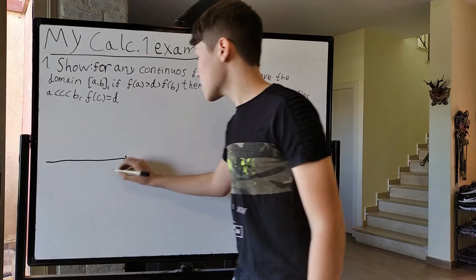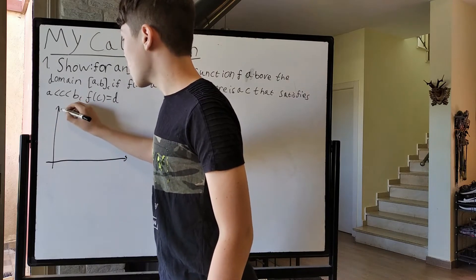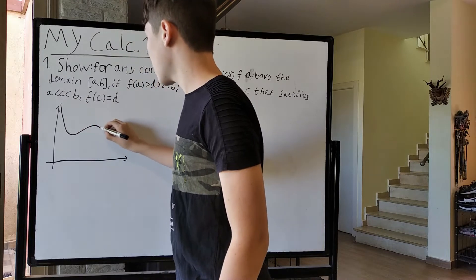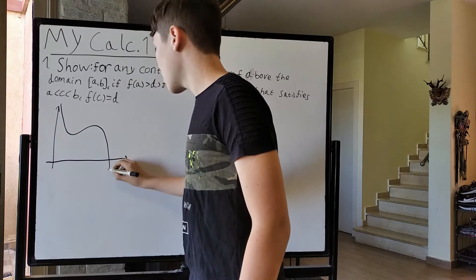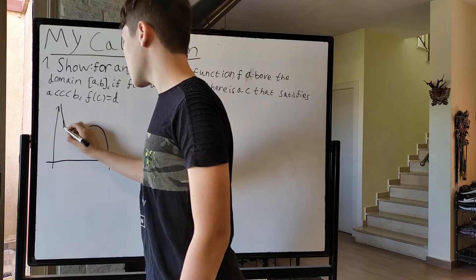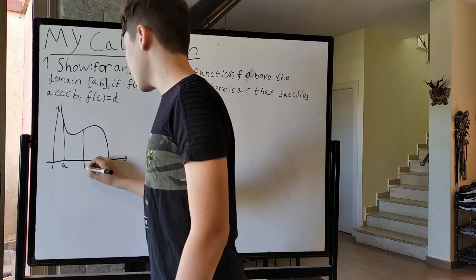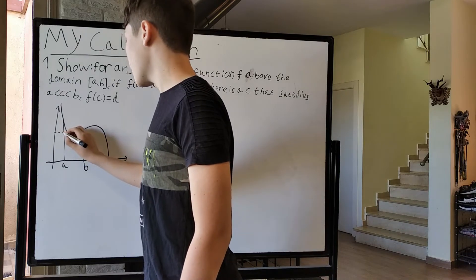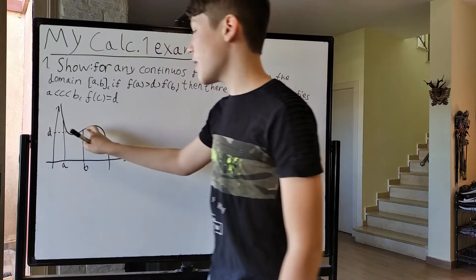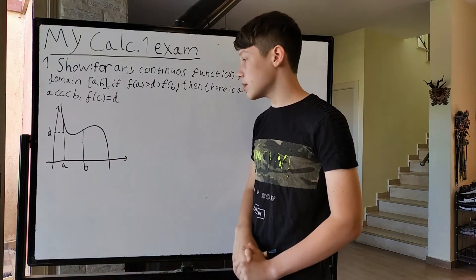So suppose I have a graph of the function, and I have this is a, this is b. And I'm saying for any d between f(a) and f(b), there is an f(c) that is equal to d.